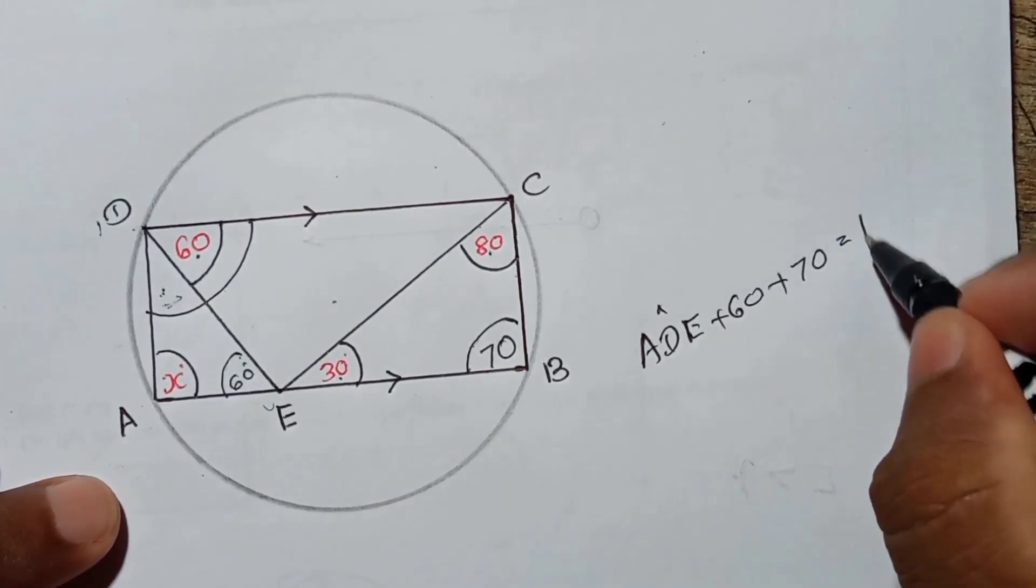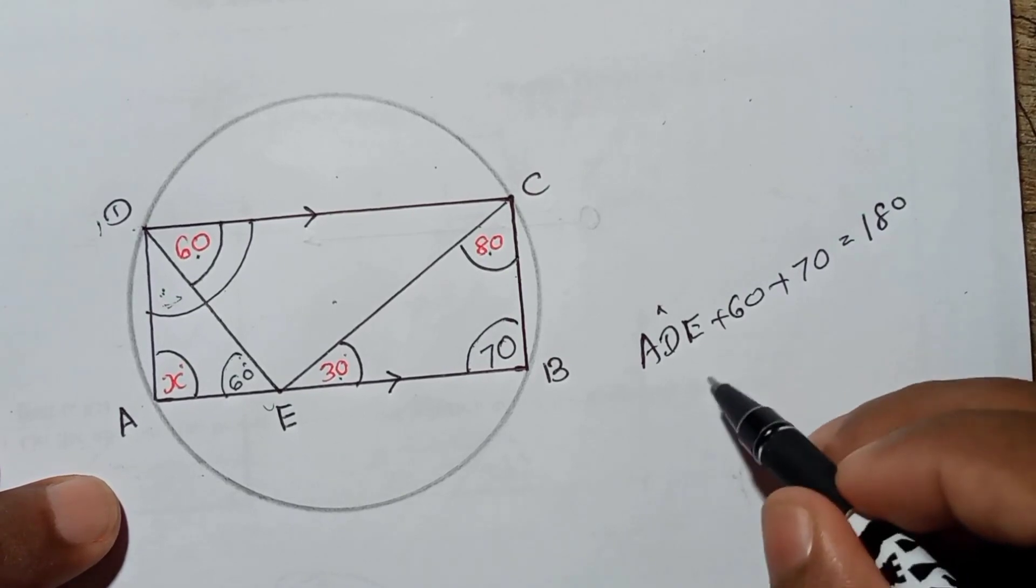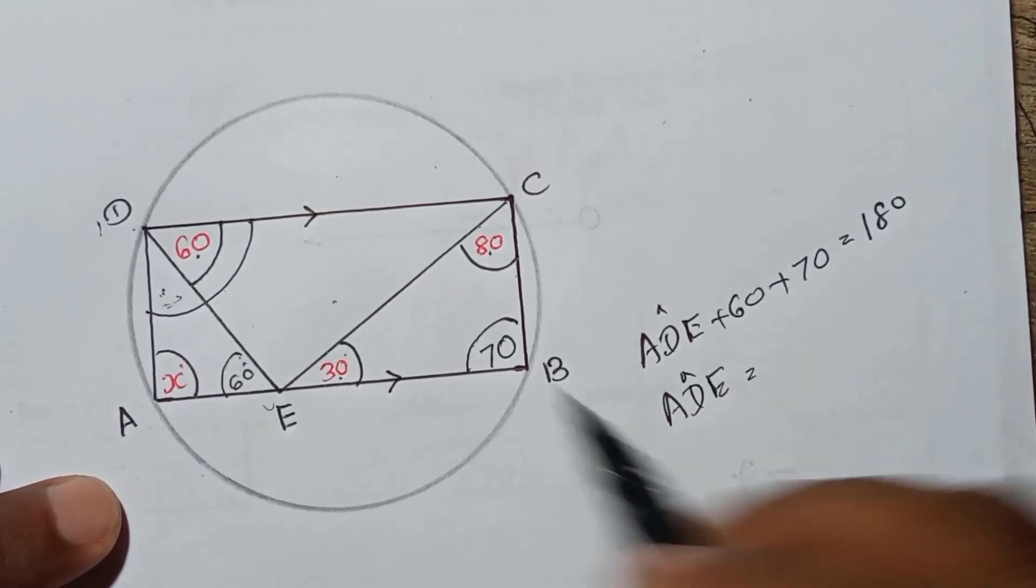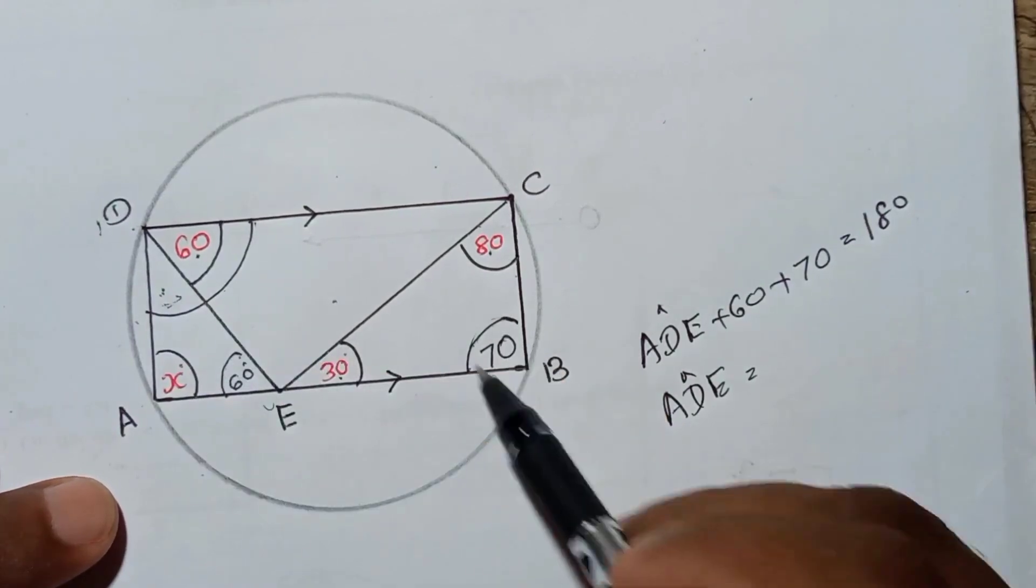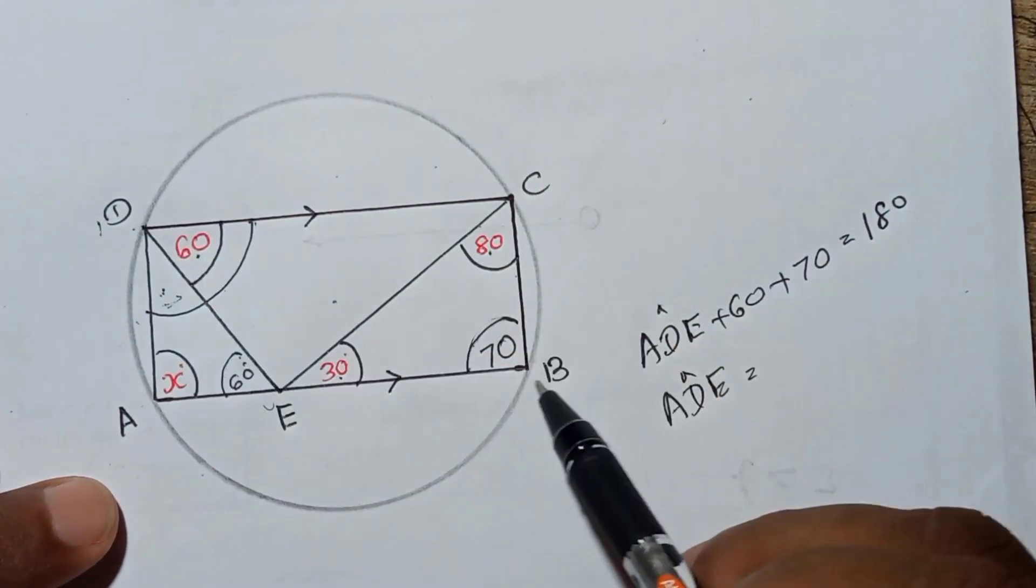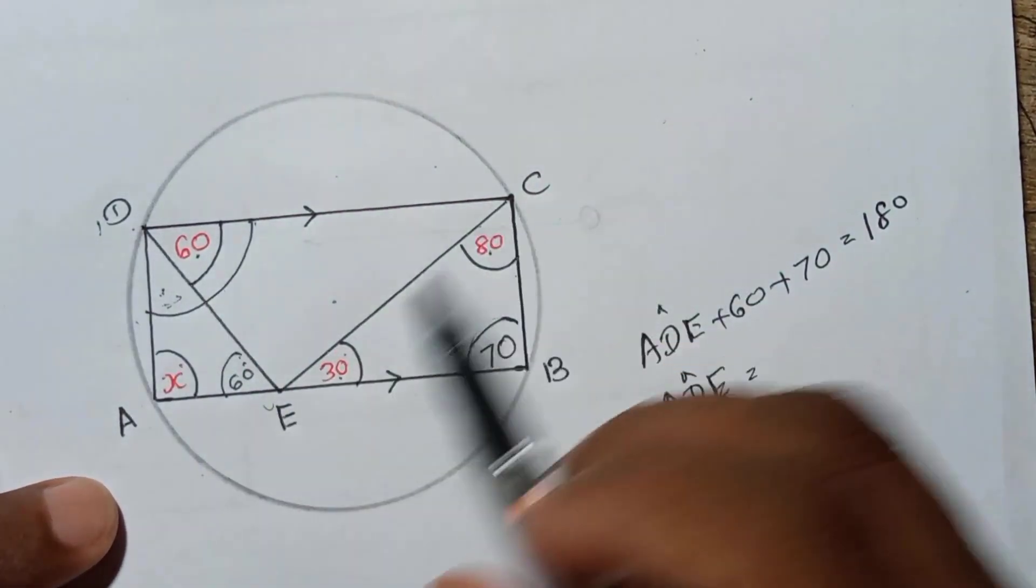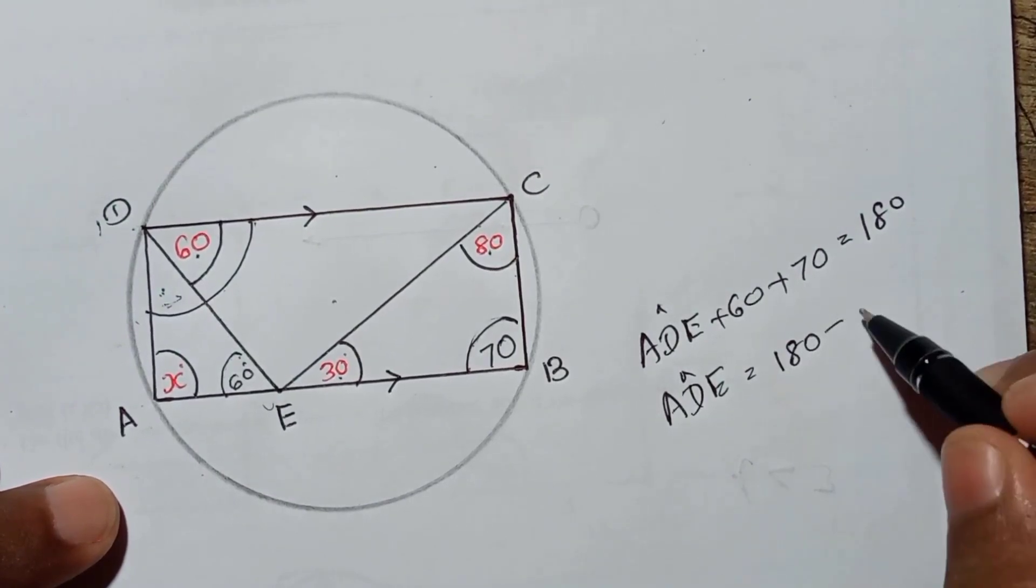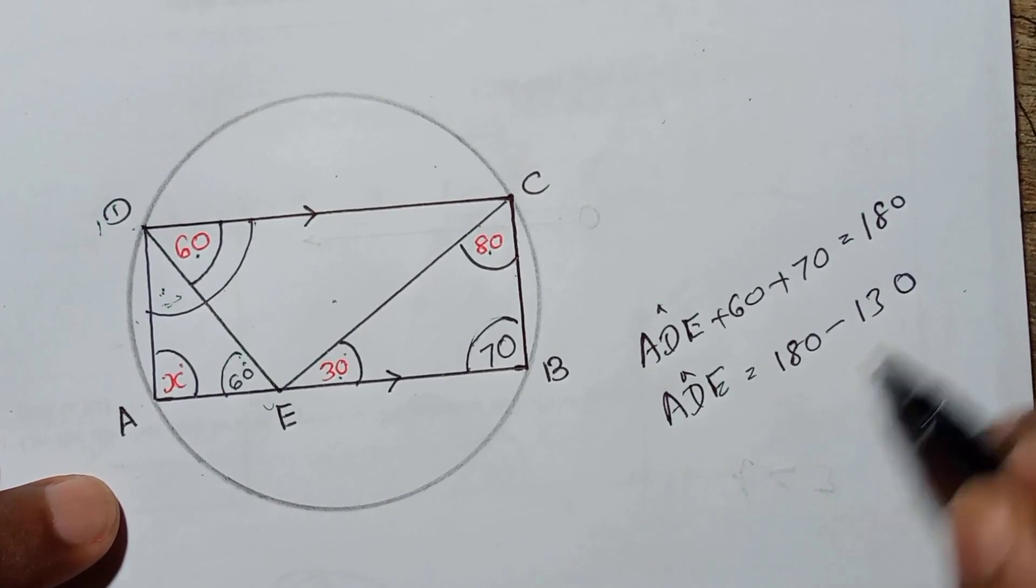Now using this, you can get ADE, because we know this angle plus this angle must be 180. This is a cyclic quadrilateral DCBA, with those vertices on the circle. So from 180, if you subtract this, it will be 50 degrees.